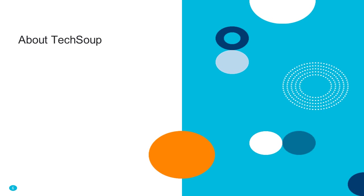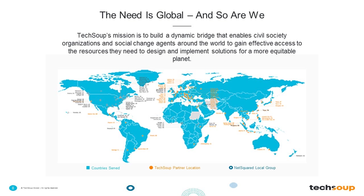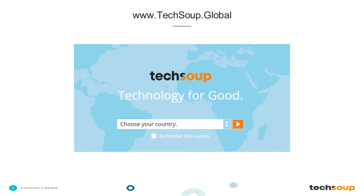A few things about TechSoup. We're located in San Francisco, California. We're a 501 nonprofit like many of you joining us today. We work to empower organizations around the world to help them get the latest tools, skills, and resources to achieve their mission. You can see from our map that we serve almost every country in the world. We have about 62 partner NGOs around the world. The need is global, and we have a dedicated website for countries outside of the U.S. at www.techsoup.global — this is where people outside the U.S. would access technology donations.